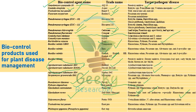Peniophora gigantea, also called Phlebiopsis gigantea, has the trade name Rotstop and is recommended against Heterobasidion annosum. Importantly, Phlebiopsis gigantea — otherwise called Peniophora gigantea — is the first biocontrol agent ever developed, acting against Heterobasidion annosum.